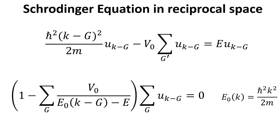We note that non-trivial solutions to the problem are found by requiring that the coefficient multiplying the summation over the Fourier components of the wave function, U of K minus G, vanish. This condition leads to the following.